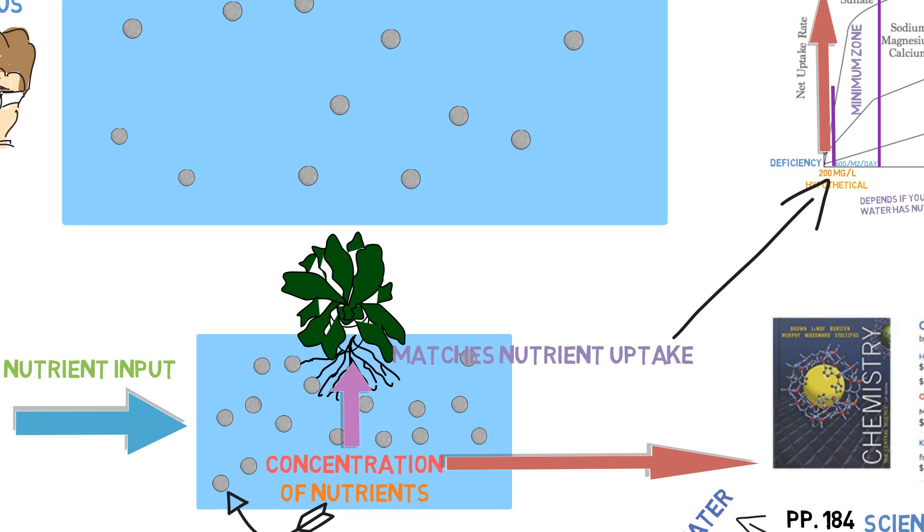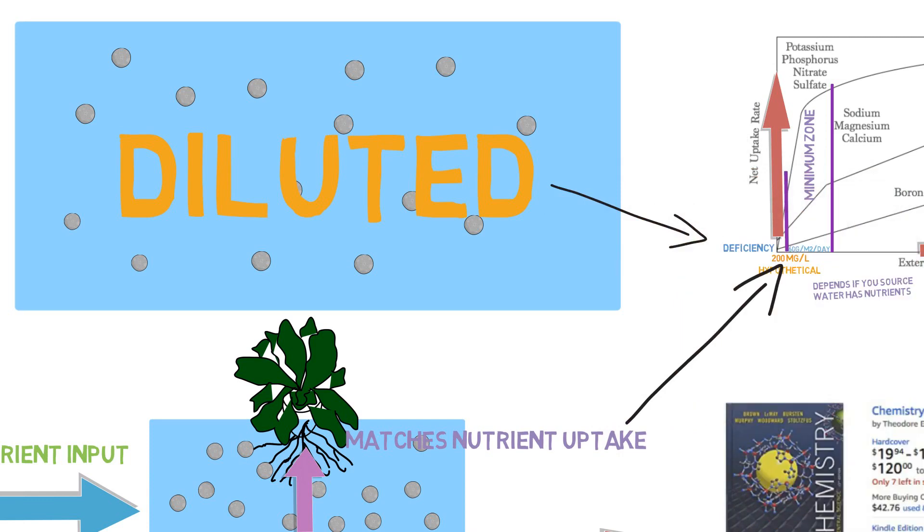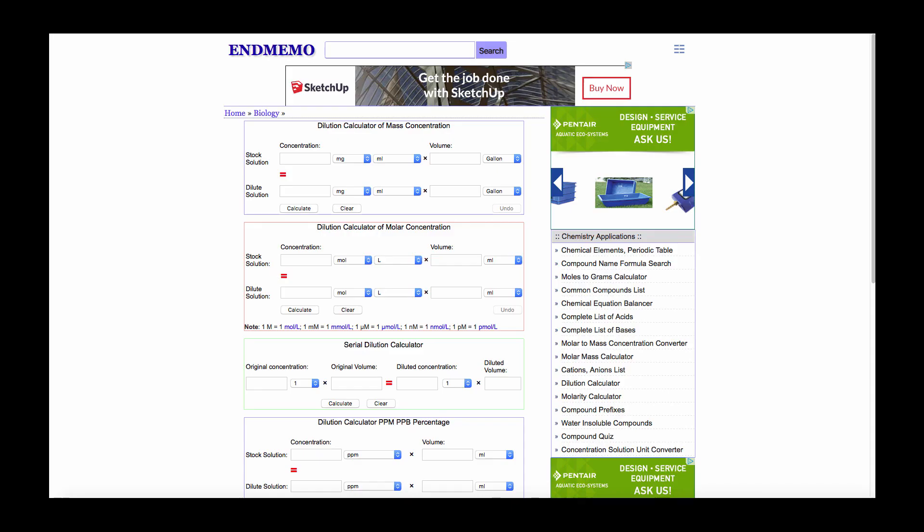So if we fluctuate the water amount, if we change the water amount as you were suggesting, increase the water amount and keep the nutrient input the same, 60 grams per square meter, but double the water volume, it's going to dilute the nutrient concentration. Let's get some more proof.